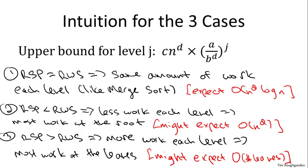Summarizing: the three cases of the master method correspond to the three possible outcomes in the battle between subproblem proliferation and work-per-subproblem shrinkage — a tie, proliferation winning, and shrinkage winning. It's exactly the ratio between A (rate of subproblem proliferation) and B to the D (rate of work shrinkage) that governs which of these three recursion tree types we're dealing with. Intuitively, the predicted running times are: N to the D log N for the tie case, N to the D when the root is worst, and proportional to the number of leaves when the leaves are worst.